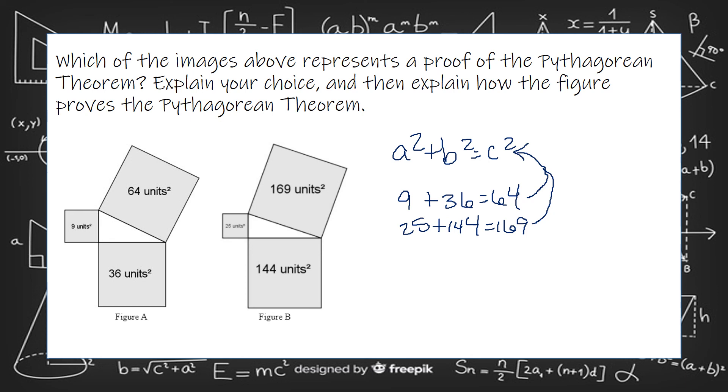So 9 plus 36 equals 64, or 25 plus 144 equals 169. So your job is to figure out which of these is true, which of those do equal, and then explain how it proves that. Say, well, those do add to prove this. So I'm not telling you the answer there. But I want you to use those two formulas there to figure out.